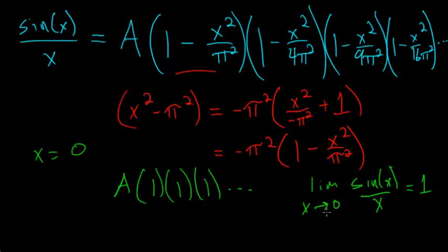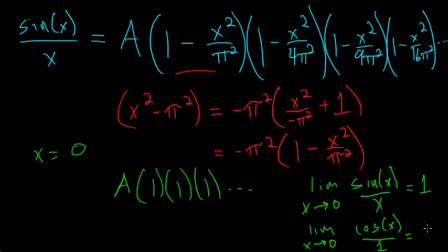We can also apply L'Hôpital's rule: taking the derivative of the numerator and denominator gives the limit as x → 0 of cos(x)/1, and cos(0) = 1. So the left-hand side equals 1 and the right-hand side is A times an infinite product of 1's, meaning A = 1.